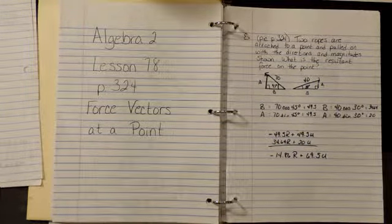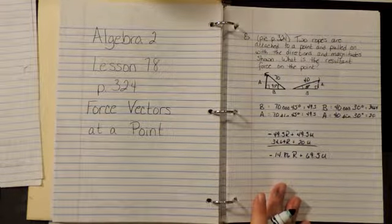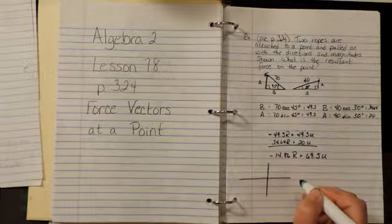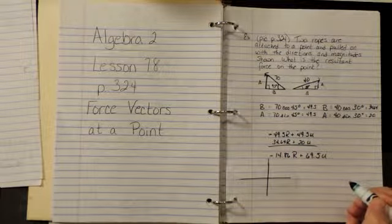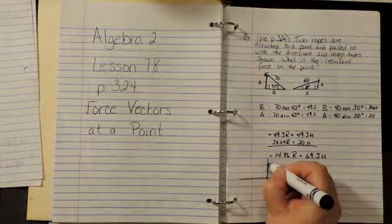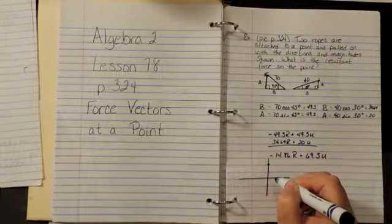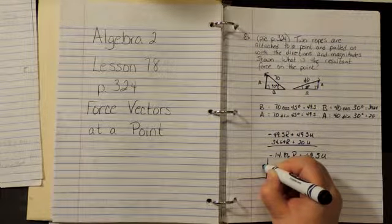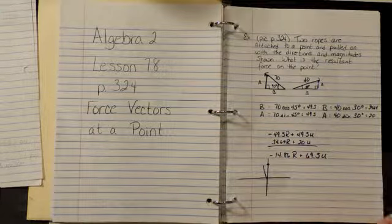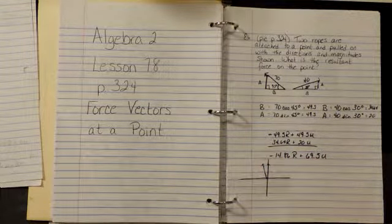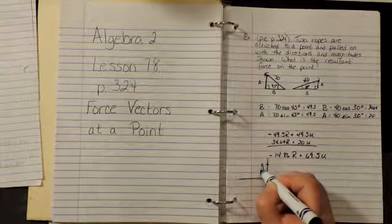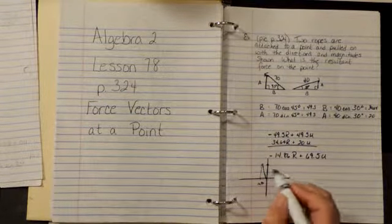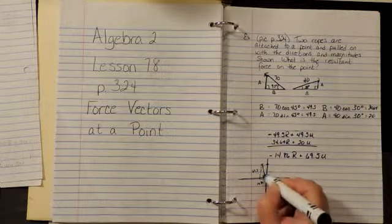If we wanted to express this force in polar coordinates, we would have to draw this new angle. So if this point is 70, then 14 is going to be like a fourth of that. So it's going to be something like this. It's a very steep angle. So our right is 14.86, our up is 69.5. Here's our theta.